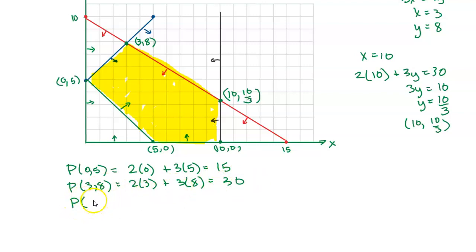The profit at the next corner, let's see, I'm going to use 10, 10 thirds. So 2 times 10 plus 3 times 10 thirds gives me a profit of, looks like, 20 plus 10 is 30 again. Interesting.